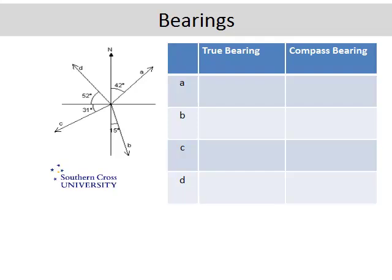A true bearing is an angle from north going in a clockwise direction to the direction that we're considering. A compass bearing is where you start with a north or a south and you follow it by a certain angle in an easterly or a westerly direction.